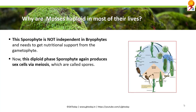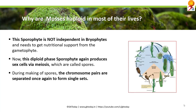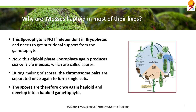These cells are called spores. During the making of spores, chromosomes pair and separate once again to form single sets. The spores are therefore once again haploid and develop into a haploid gametophyte. This is how the life cycle of the bryophyte continues — the dominant phase is the gametophyte.